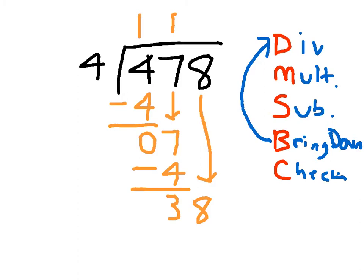Here's another problem: 478 divided by 4. I've shown you some of those steps already, but I've brought down the 8. Whenever you bring down a number, you always go back to that division step again. The other reason you know things aren't done yet is that there's still a spot with no number. 478 divided by 4 can't be 11 tens — there are still more steps to do.